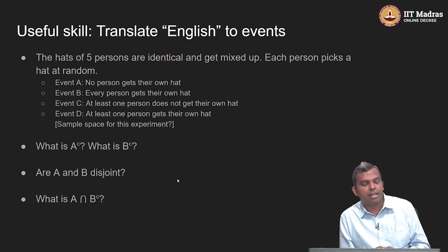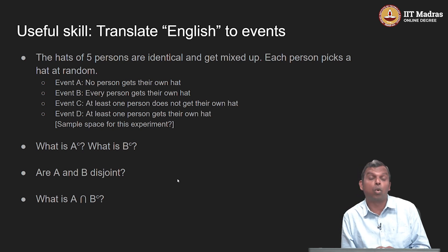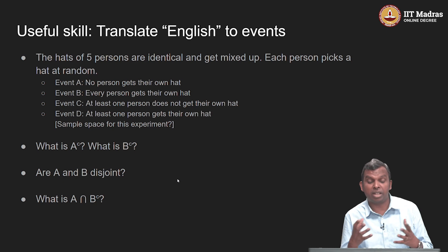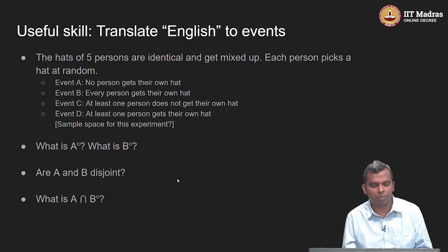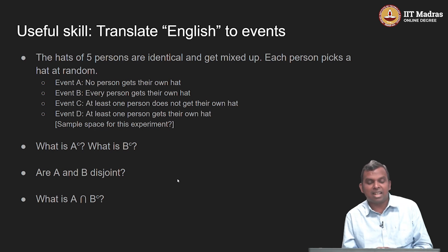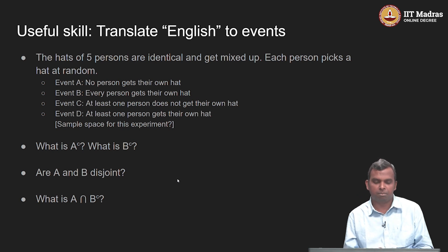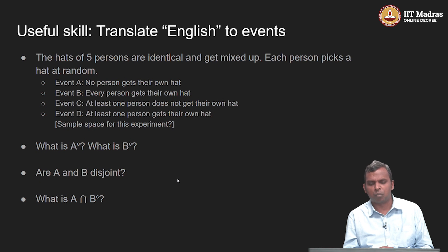Here are the events. Event A is that no person gets their own hat — this is called a derangement in mathematics, meaning no one was lucky, completely unlucky. Event B is every person gets their own hat — all of them got their own hat. Event C is at least one person does not get their own hat. And event D is at least one person gets their own hat.